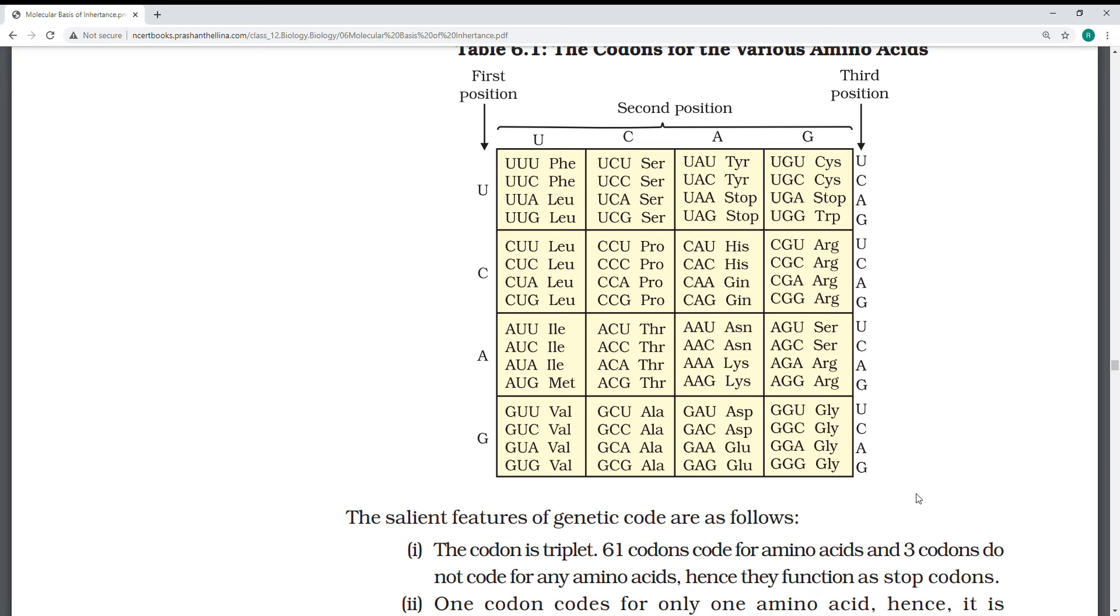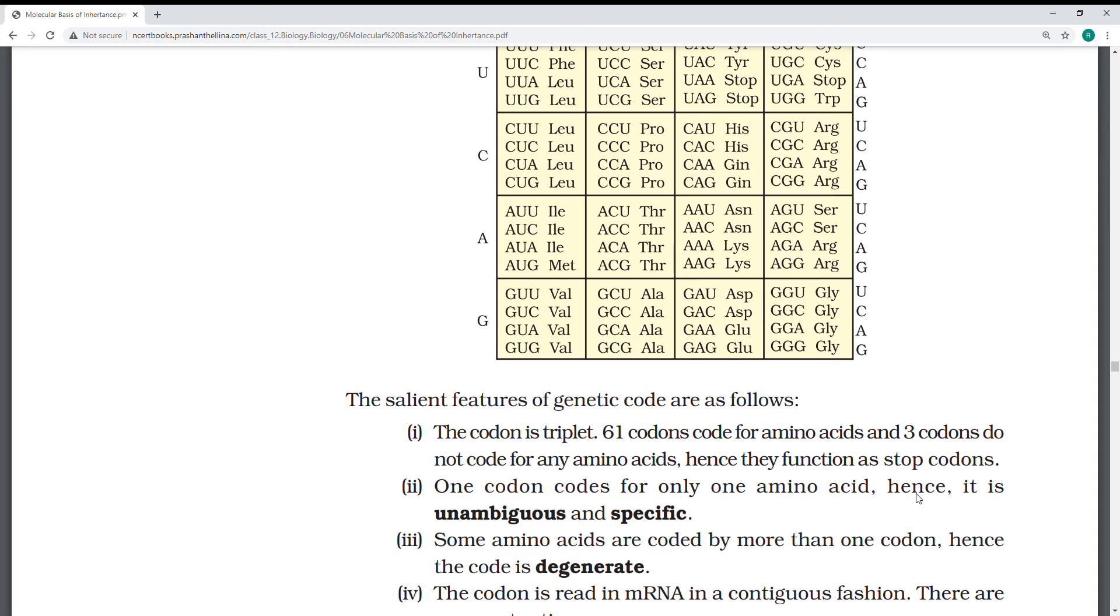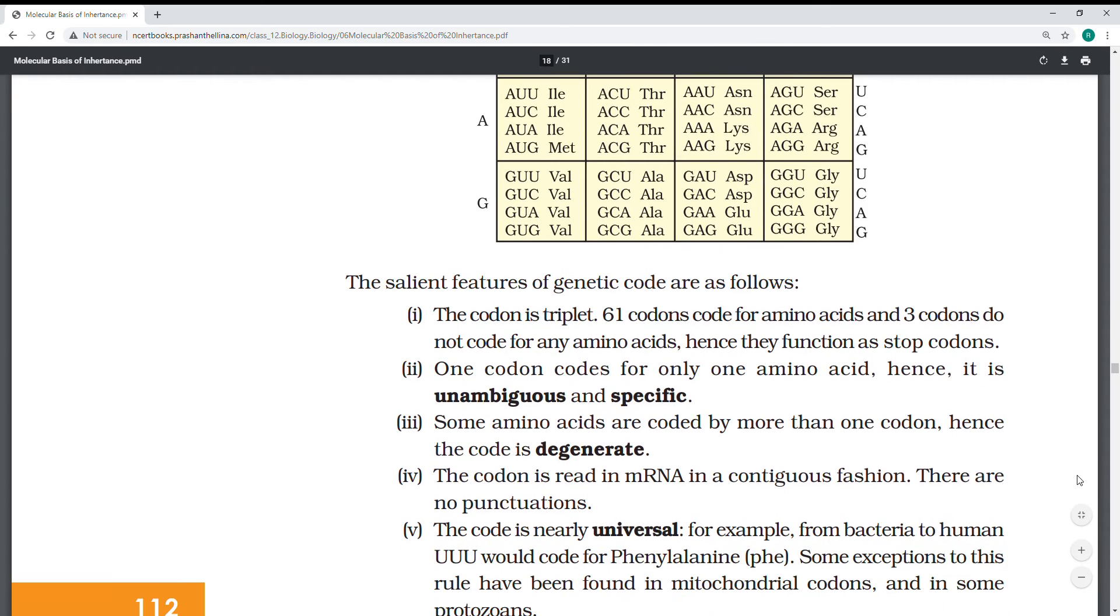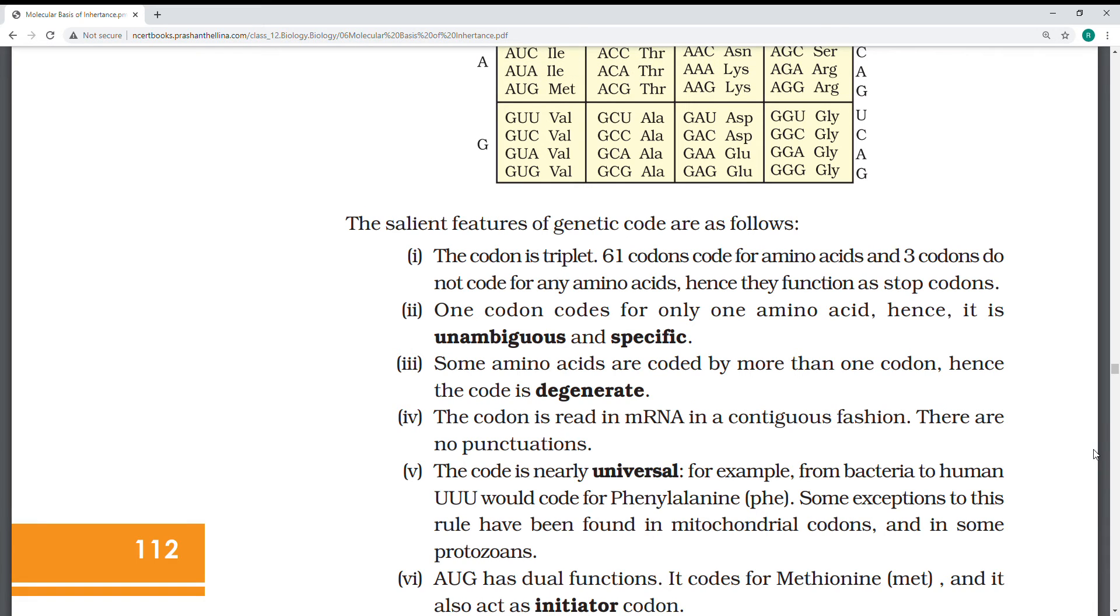There are salient features of these genetic codes. The codon is always a triplet, not four, only three. 61 codons code for amino acids. Three codons, which I told are stop codons, do not code for any amino acid. These are only to stop the synthesis of proteins.